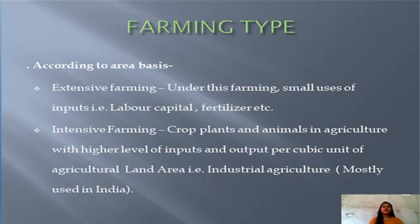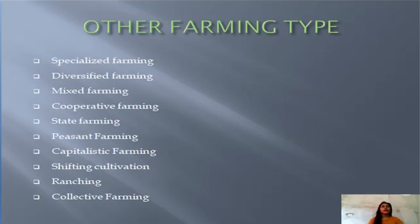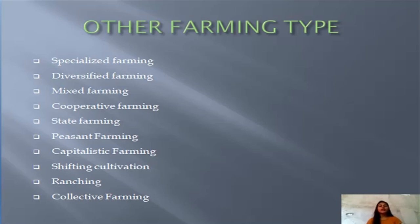Other farming types include specialized farming, which refers to only one kind of farm business like food crops or dairy. Diversified farming means more than 50 percent of income comes from a single enterprise. In mixed farming, crop production is combined with livestock. In cooperative farming, resources are shared by more than one farmer.